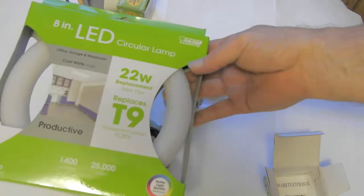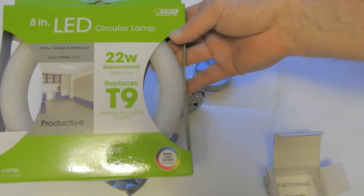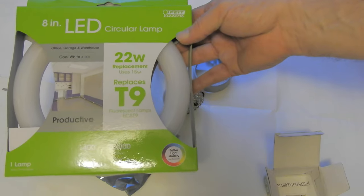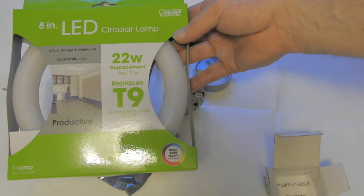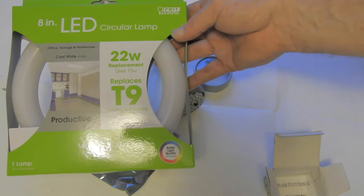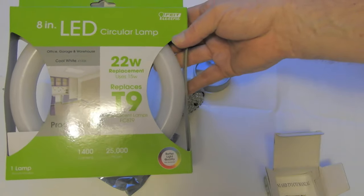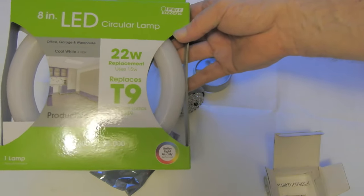Then I also have this 22-watt circline bulb replacement, LED bulb replacement. And this one uses the existing ballast. It's time to get one that you need to rewire, so I'm not sure the ballast is good on the fixture I'm going to put this in, but we'll see how that goes and how it looks.